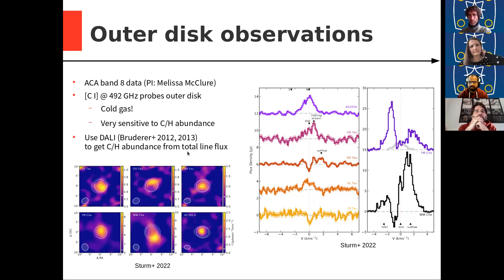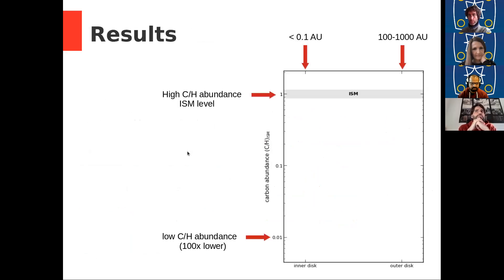So I will go straight to the results. And I will show that in such a plot. So on the x-axis, I show the radius in the planetary disk. So we have basically two points, the inner disk, which is in the accreting column, really close to the star, 0.1 AU. And we have the outer disk, so that is really 10 to 1,000 AU, something like that. So on top, we have high carbon abundance. Here is the ISM level. And on the bottom, we have a low carbon abundance. So we span almost two orders of magnitude.